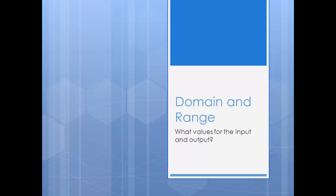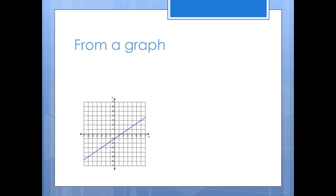Let's first take a look at the domain and range from a graph. This first graph shows a linear function. Notice that the line continues on in both directions.